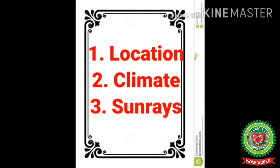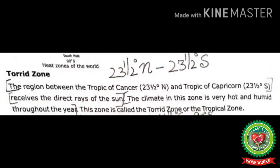The region between the Tropic of Cancer (23.5° North) and the Tropic of Capricorn (23.5° South) receives the direct rays of the sun. The climate in this zone is very hot and humid throughout the year. This zone is also called the torrid zone or the tropical zone.